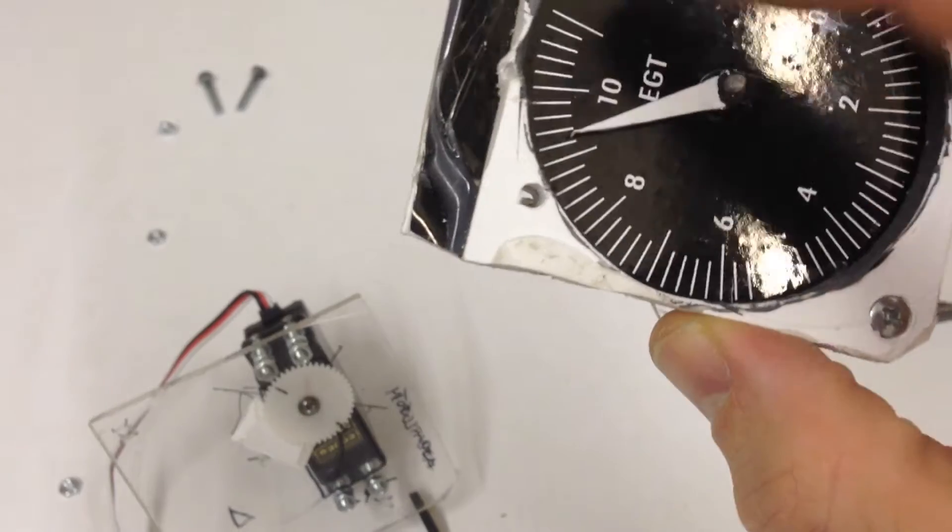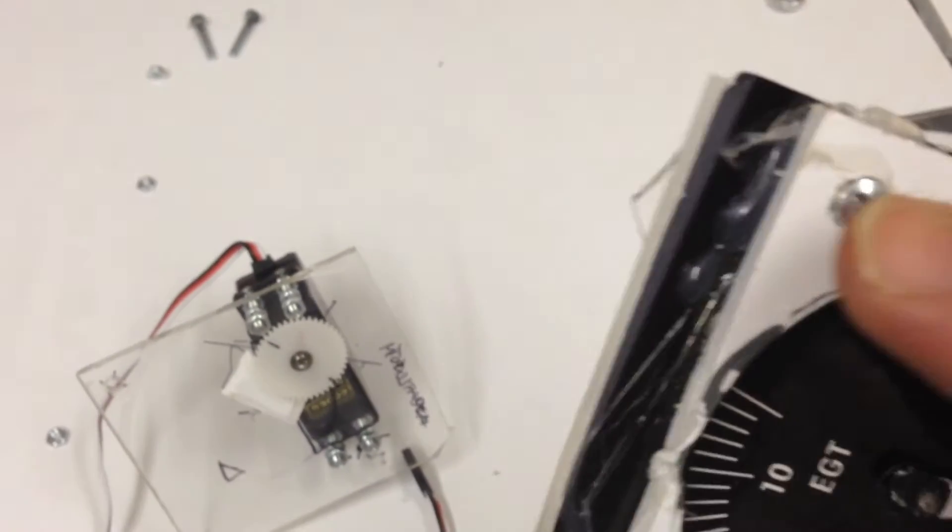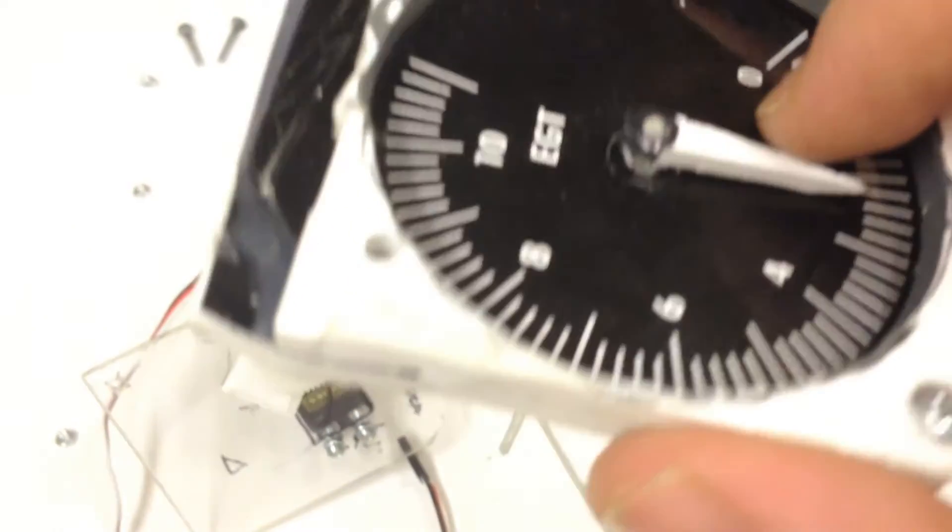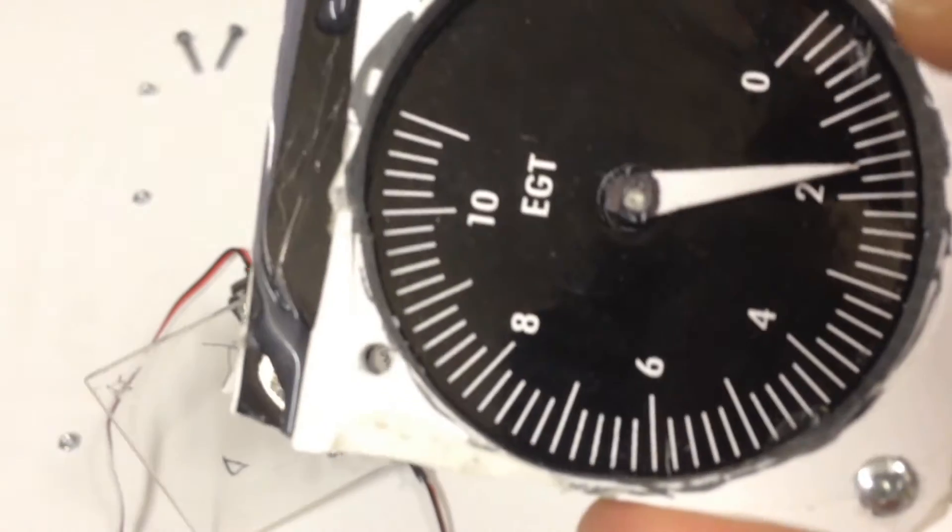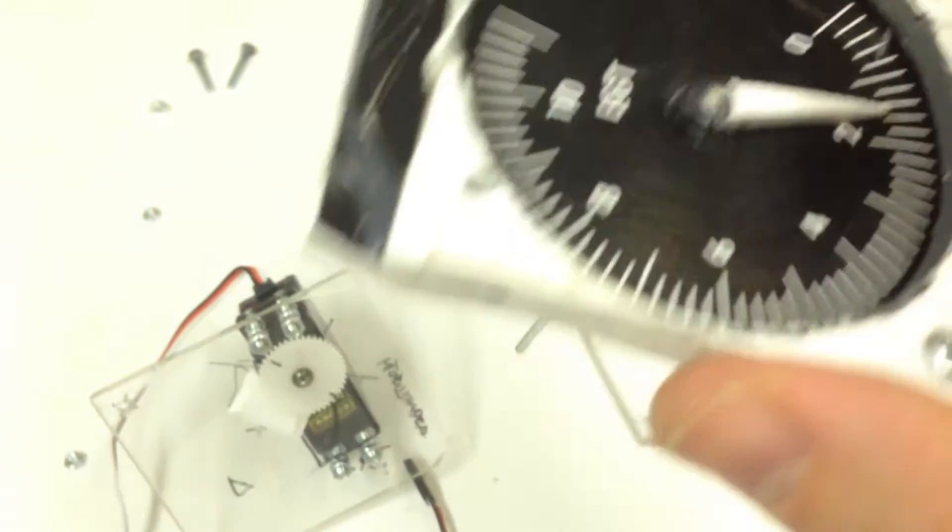The needle here of the gauge is just made from white foam, the same material as the rest of the gauge. And I just cut it in a pointy figure and added some black paint.